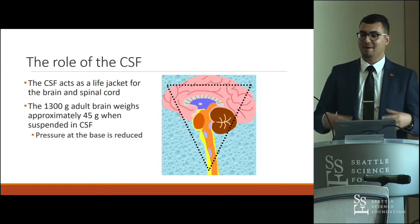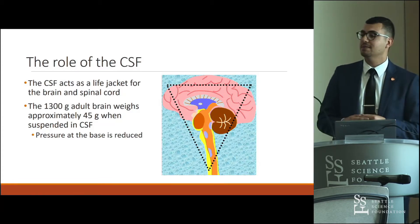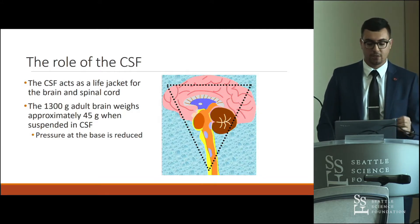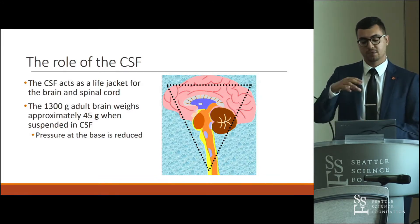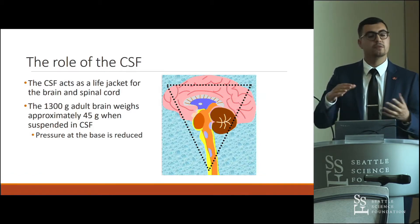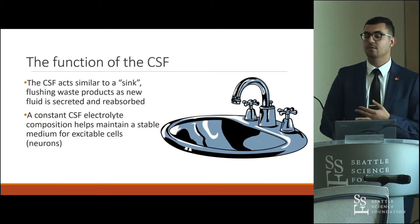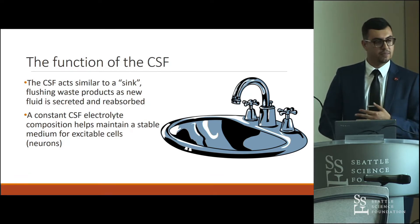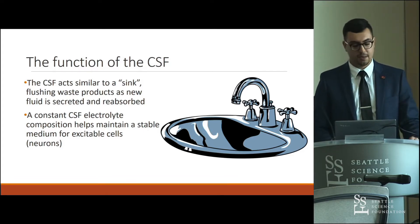CSF serves several roles. It acts as a water jacket — essentially a shock absorber — cushioning the brain and spinal cord from sudden accelerations or decelerations. It also provides buoyancy: the brain's dry weight is about 1,300 grams, but when suspended in CSF it's effectively about 45 grams, reducing pressure on the base of the brain. Additionally, CSF flushes waste products and toxic metabolites from the CNS — which is why it regenerates four times a day — and helps maintain electrolyte balance for neurons.